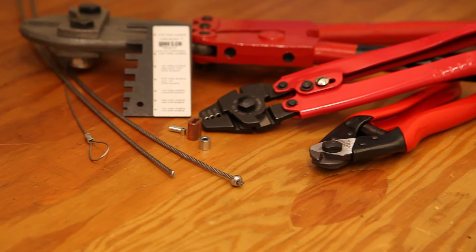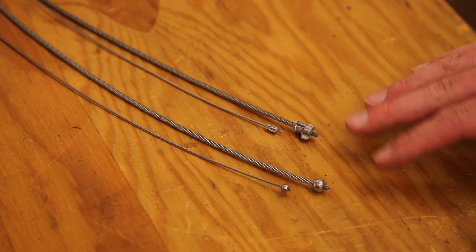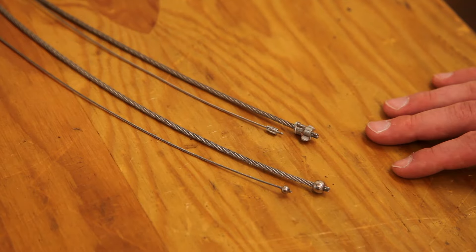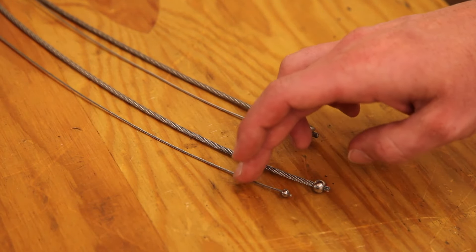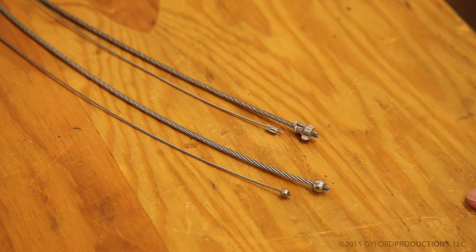Today we'll go over wire swages or crimps. There are two types of swages we sell here at Gyford. Each different type is offered in sizes for both 3/64ths and 1/8th inch wire.